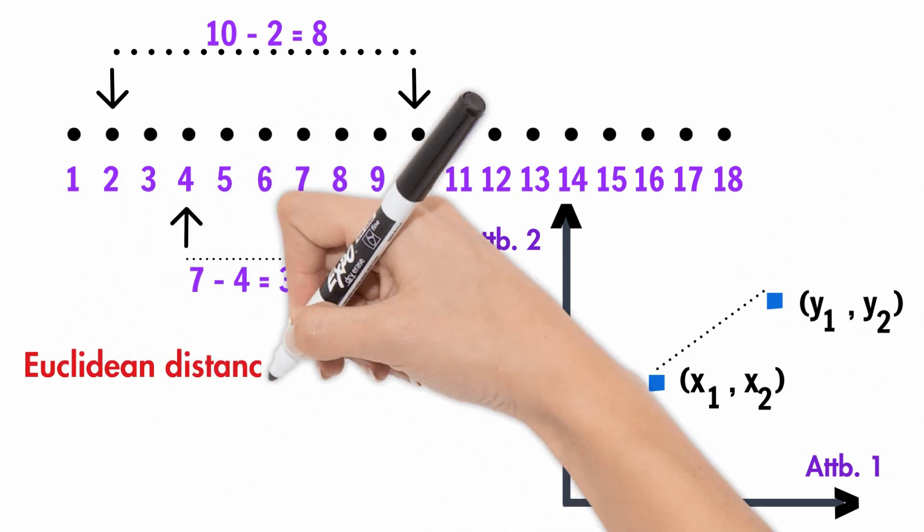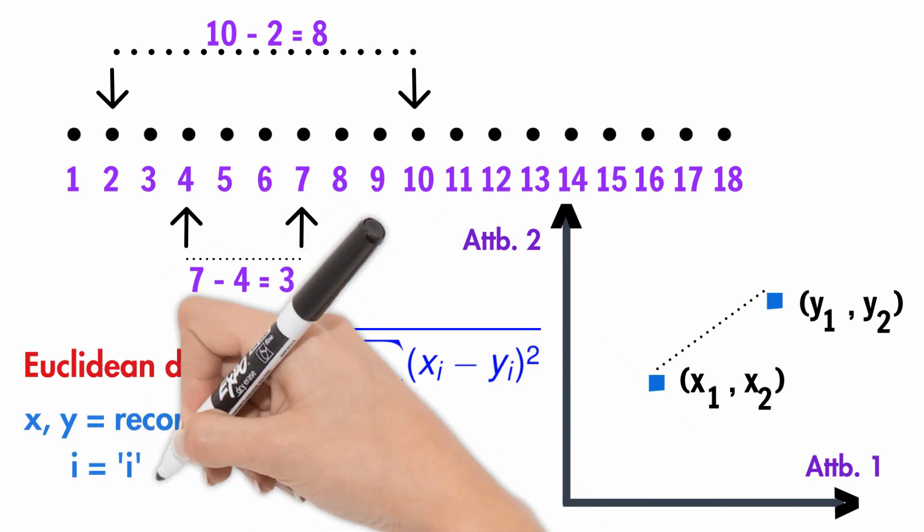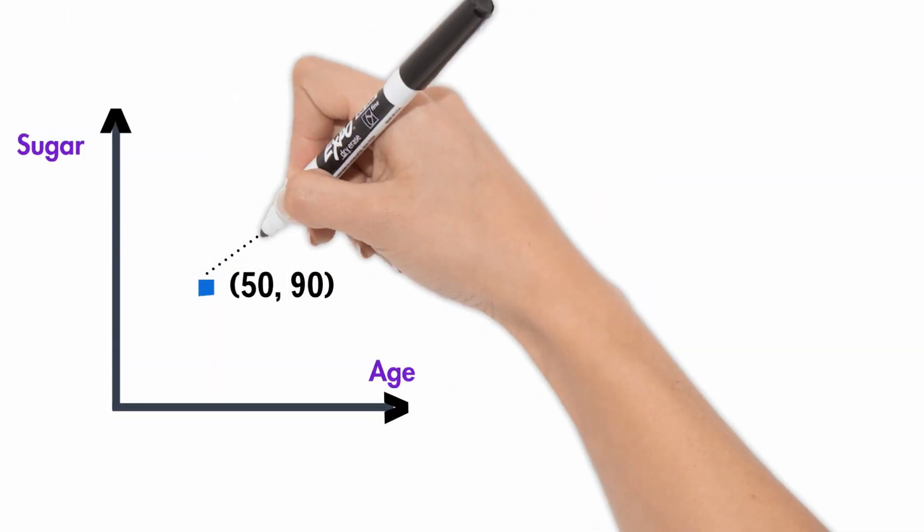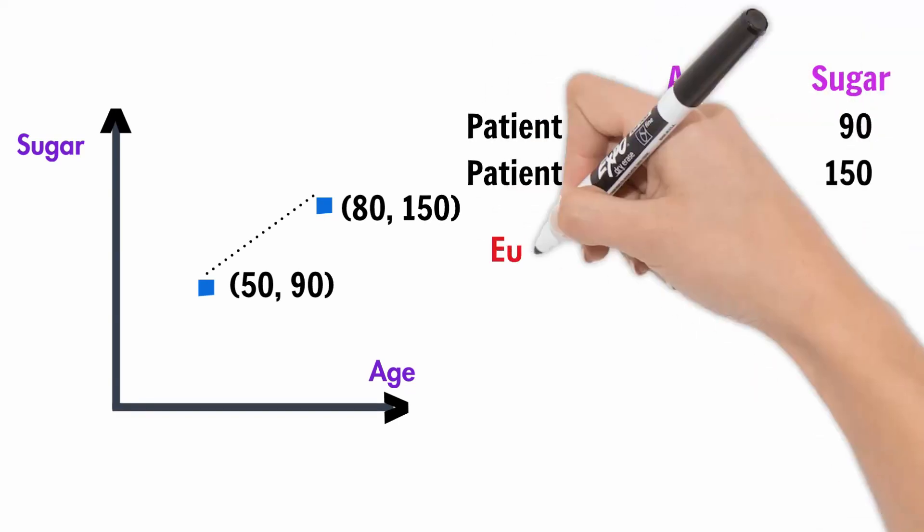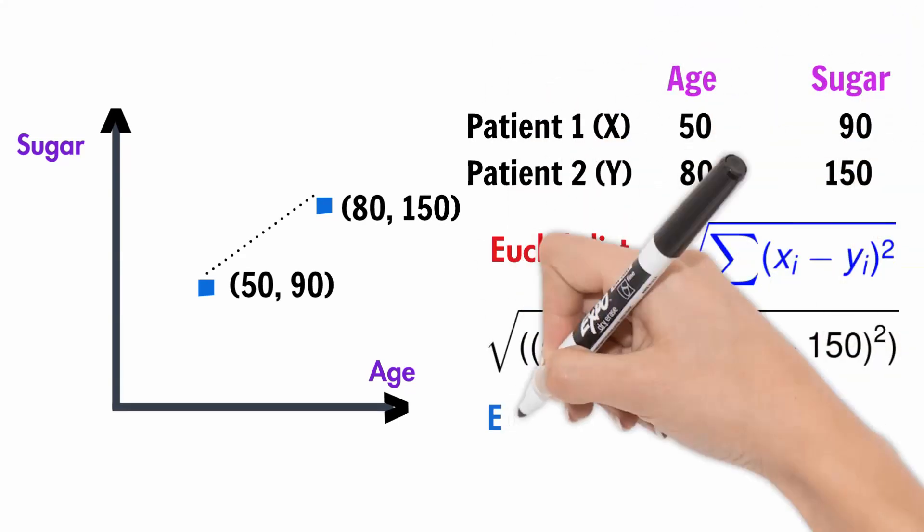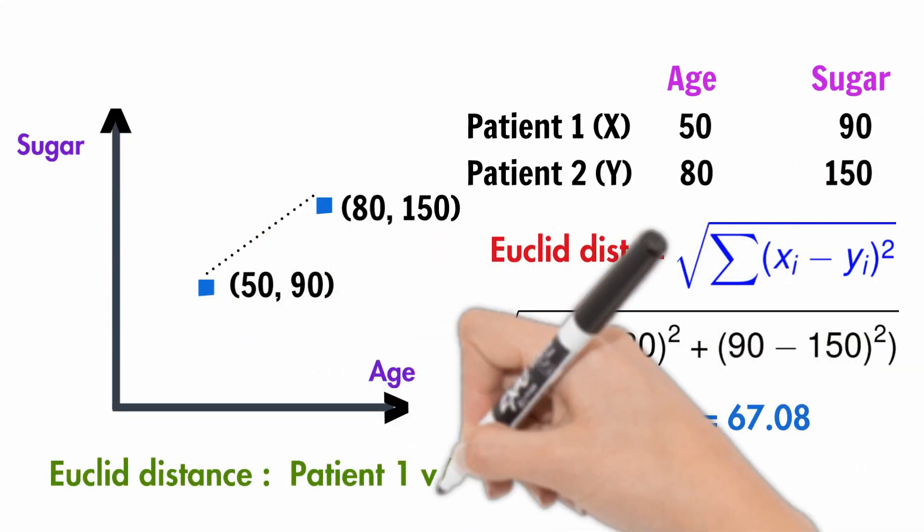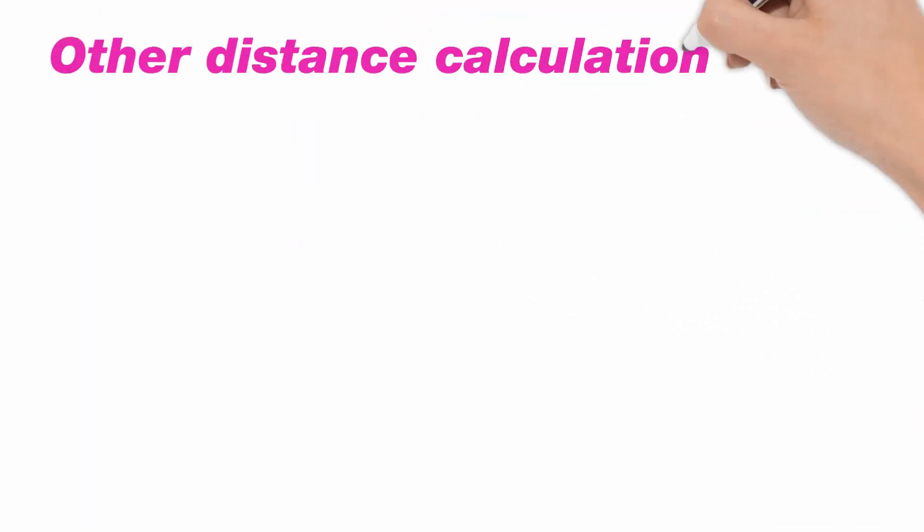The formula is like so: here x and y are the cases and i represents the attribute values for the two cases. The following example demonstrates the calculation. We will calculate Euclidean distance for two cases on two attributes, namely age of the person versus the blood sugar content. Substituting the values, the distance comes to 67.08. This distance is compared between cases to identify as close or far away from each other.